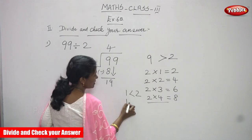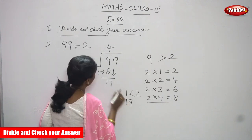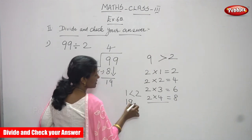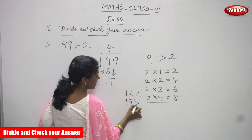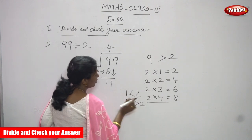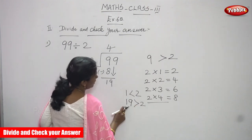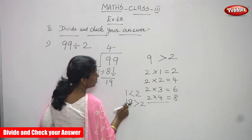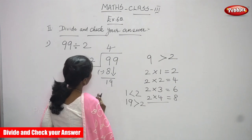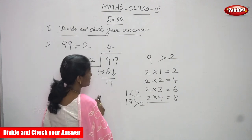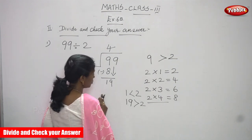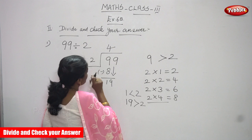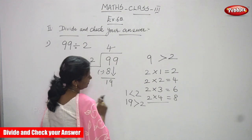So now 19 is compared with the divisor 2. Since 19 is greater than 2, it is enough to divide. So now you start doing the division — you must use the 2 times table again.